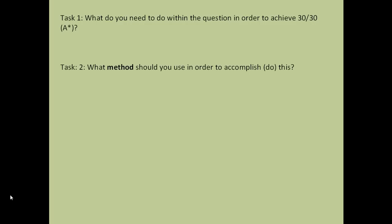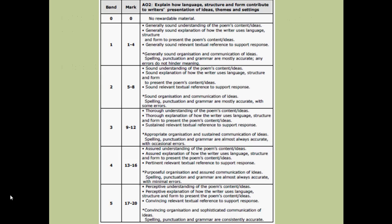Now two questions for you to see if you've been doing your revision. Task one: what do you need to do within the question in order to achieve 30 out of 30? What do you need to do to make sure you get the marks in the mark scheme? And task two: what's the method you need to use in order to accomplish perfect marks, and that includes planning as well as answering. Pause this briefly, write down what you think the answer is, and then press play to resume when you're ready.